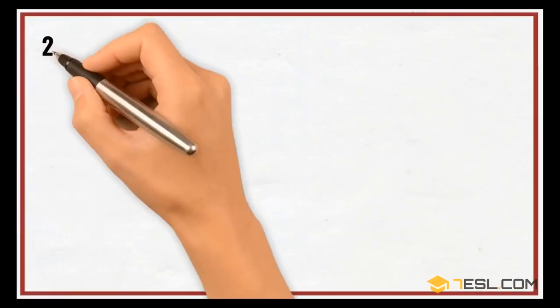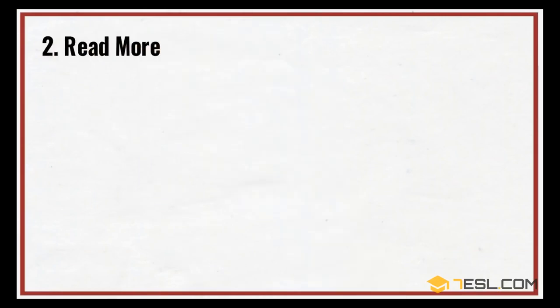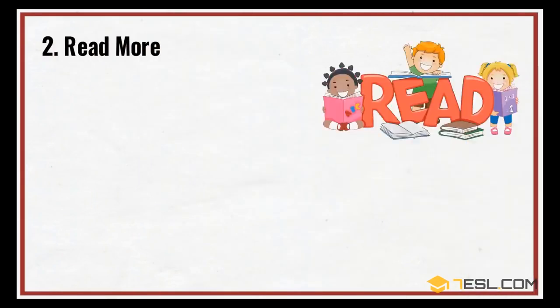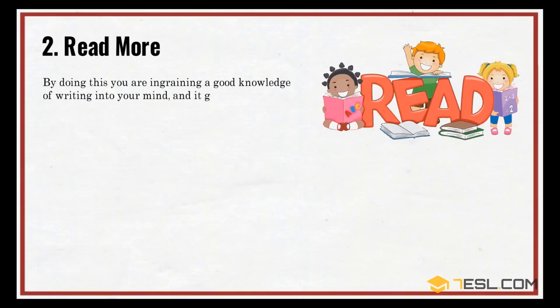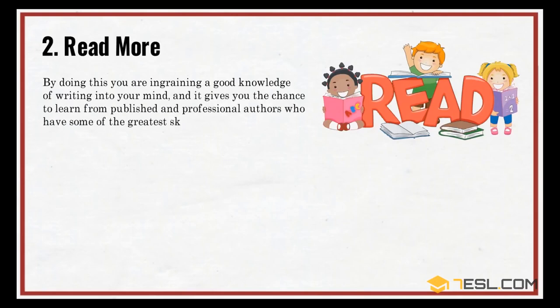2. Read more. One of the best things that you can do to improve your writing skills is to read more. By doing this, you are ingraining a good knowledge of writing into your mind, and it gives you the chance to learn from published and professional authors who have some of the greatest skills in the world.